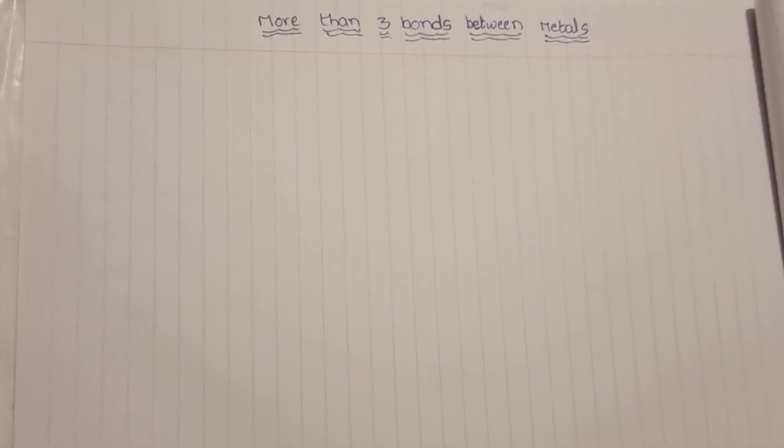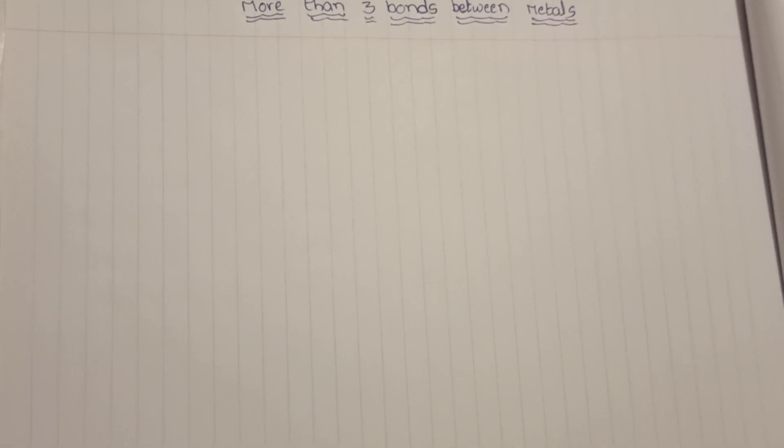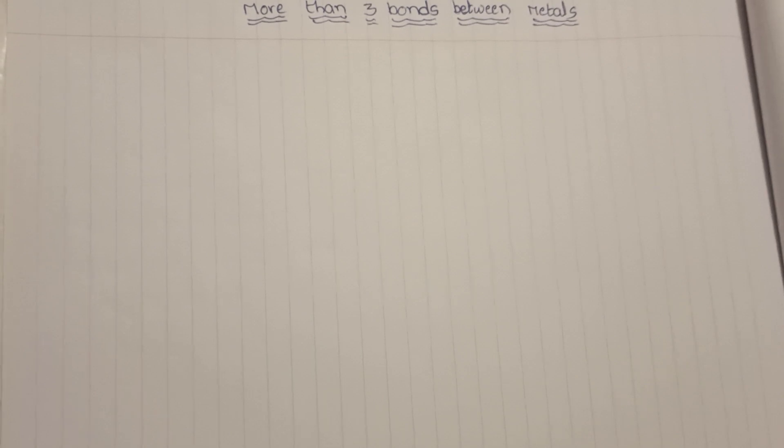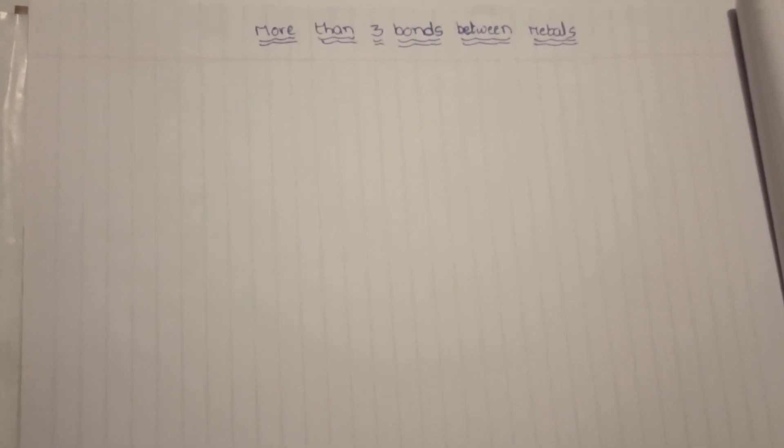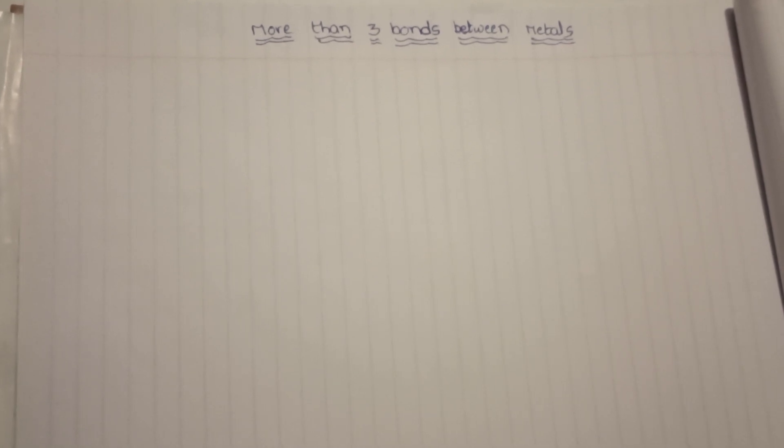Hi learners, welcome. In this video I am going to explain different and rare types of bonds between metals in metal clusters. Generally we will find these types of bonds in metal clusters. Between metals there may be possibility of having 4 bonds, 5 bonds and even 6 bonds also.